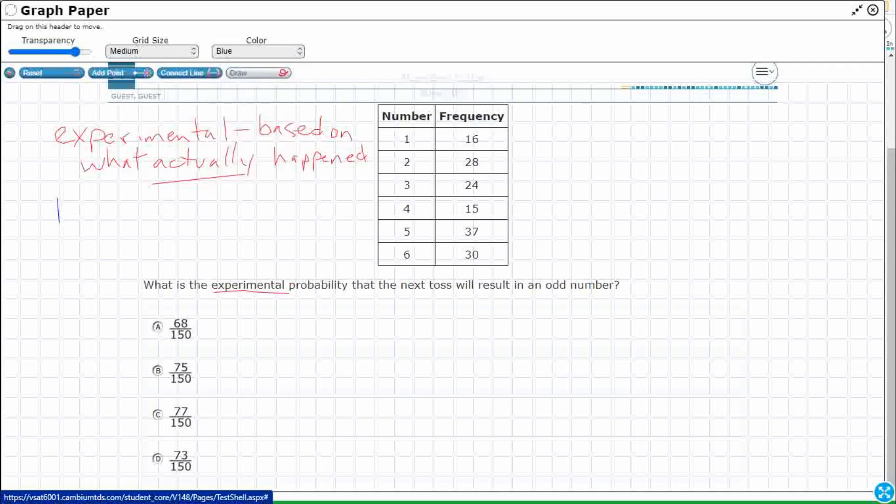Now, the other type of probability is theoretical. Now, that's different, and that answer is also here. So we have to make sure we know the difference based on what should happen. So instead of what actually happened, based on the odds, based on the probabilities, how many odd numbers we have, we think it should be this. And sometimes those two don't line up.